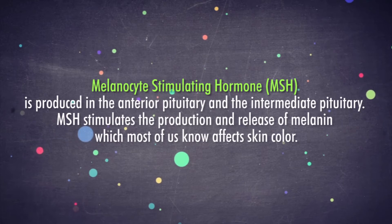Melanocyte stimulating hormone, MSH, is produced in the anterior pituitary and the intermediate pituitary. MSH stimulates the production and release of melanin, which most of us know affects skin color.